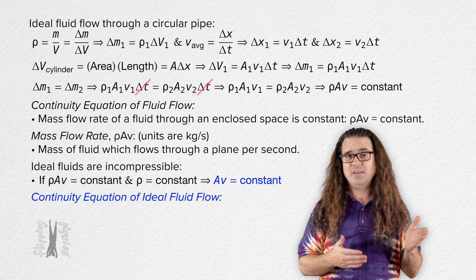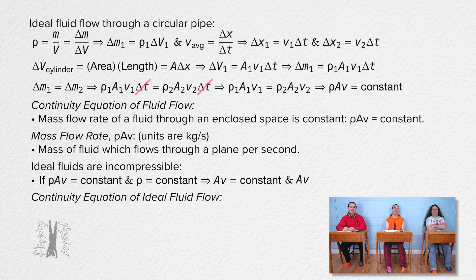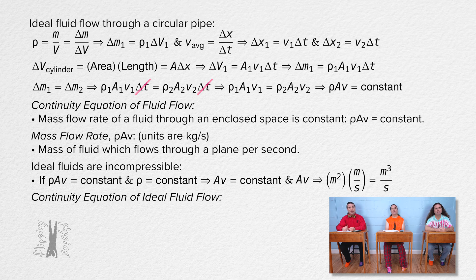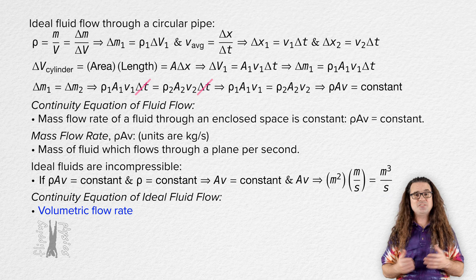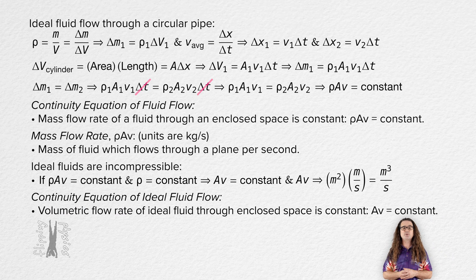What are the units for this equation? That is cross-sectional area in meters squared times velocity in meters per second, which works out to be meters cubed per second. Does that mean the continuity equation of ideal fluid flow is a volumetric flow rate? Yes — the continuity equation of ideal fluid flow states that the volumetric flow rate of an ideal fluid through an enclosed space is constant.